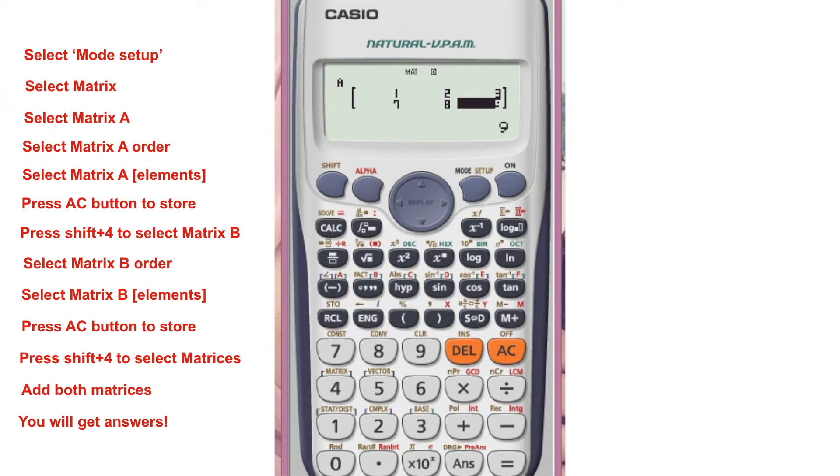We will store these elements. You will press the AC button. We will press SHIFT+4 and select the matrix dimensions. We will select matrix B.